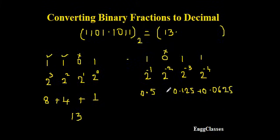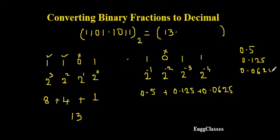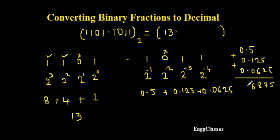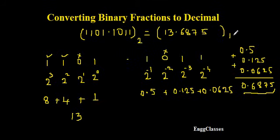Finally, I add up all the fractional decimal values to get the fractional decimal equivalent: 0.5 + 0.125 + 0.0625. Adding these gives 0.6875. So the full decimal equivalent of 1101.1011 is 13.6875.